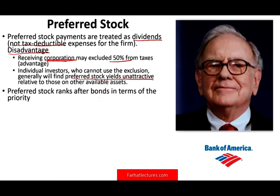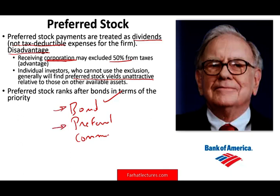Preferred stock ranks after bonds in terms of priority. The order is: bondholders are paid first in liquidation, then preferred shareholders, then common shareholders last. If the company goes out of business, you satisfy bondholders first; if any money is left, preferred shareholders get paid; and if any money is left after that, common shareholders get the remainder.